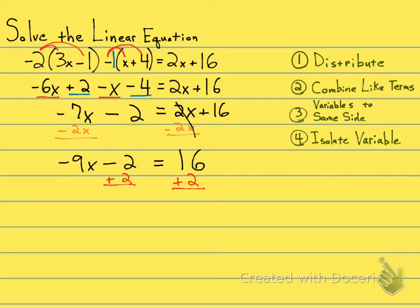And when we add 2 to both sides of the equal sign on the left-hand side, we will have no more constants. Drop down your equal sign. So I will be left with negative 9x. And on the right-hand side, 16 plus 2 is 18.